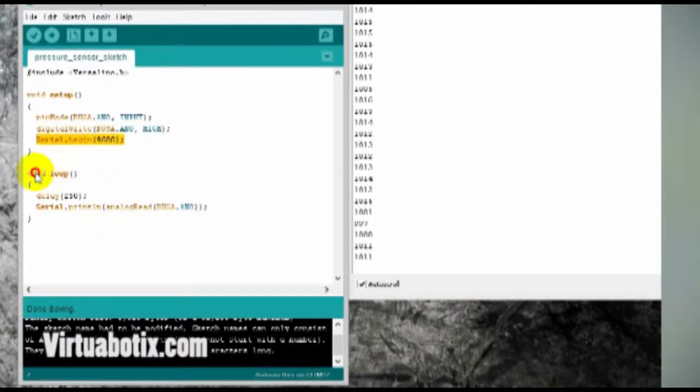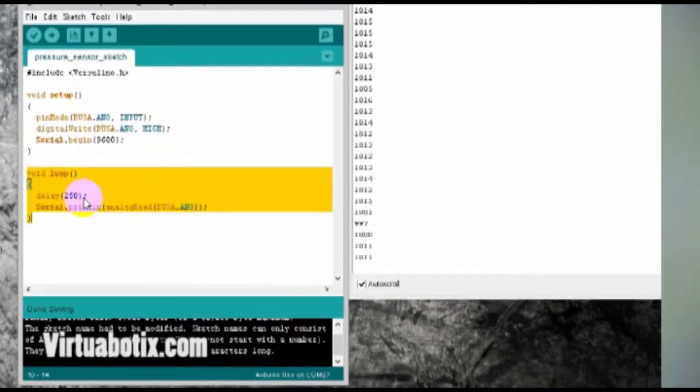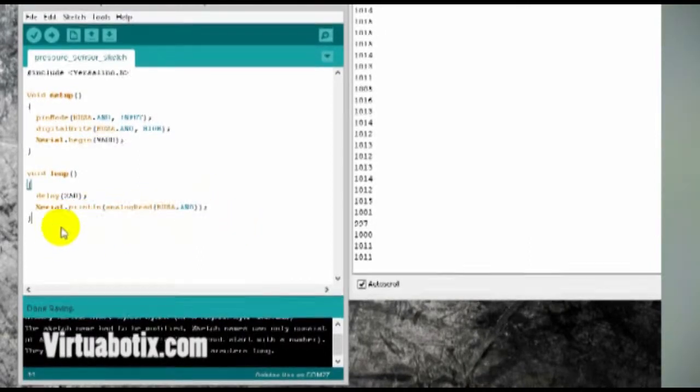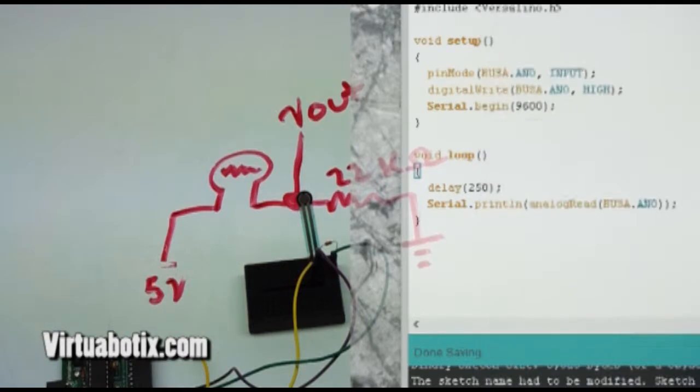And then in our loop we've got a real simple application here of delaying 250 milliseconds and then printing our analog reading off of bus A analog 0 to the screen. So with something simple like this we should be able to pretty accurately see when something is being pressed. And so I already have the program uploaded over here.